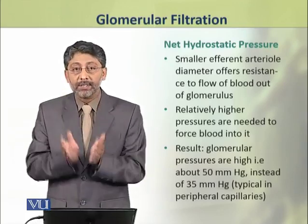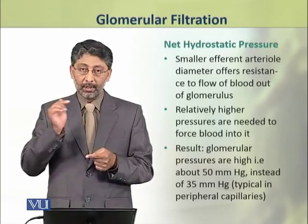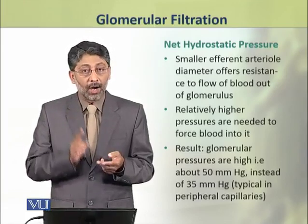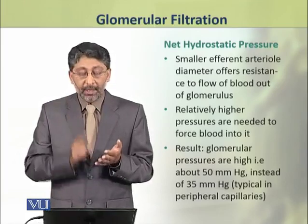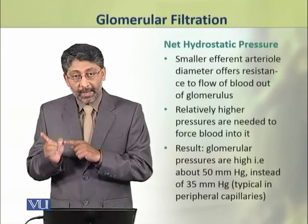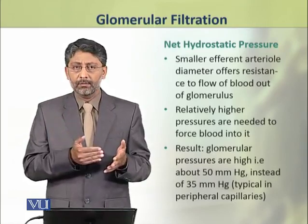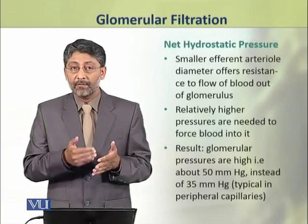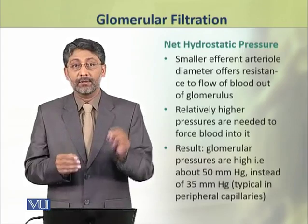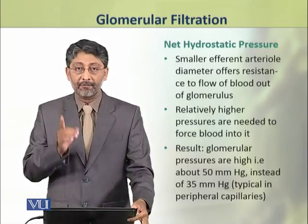The blood pressure in the glomerular capillaries is 50 mm of mercury. As compared to the peripheral capillaries, where blood pressure is 35 mm of mercury. This 15 mm mercury difference acts as the net hydrostatic pressure, which favors ultrafiltration.